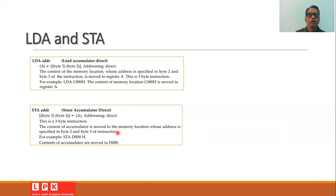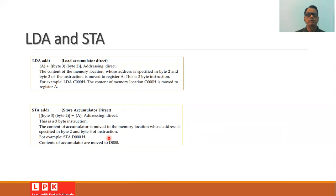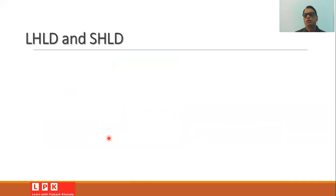STA address — store accumulator direct — moves the content of the accumulator to the memory location whose address is specified in byte 2 and byte 3 of the instruction. This is also a 3-byte direct addressing instruction. For example, STA D000H moves the accumulator contents to memory location D000. These instructions are very useful and frequently needed while writing assembly language programs for the 8085.